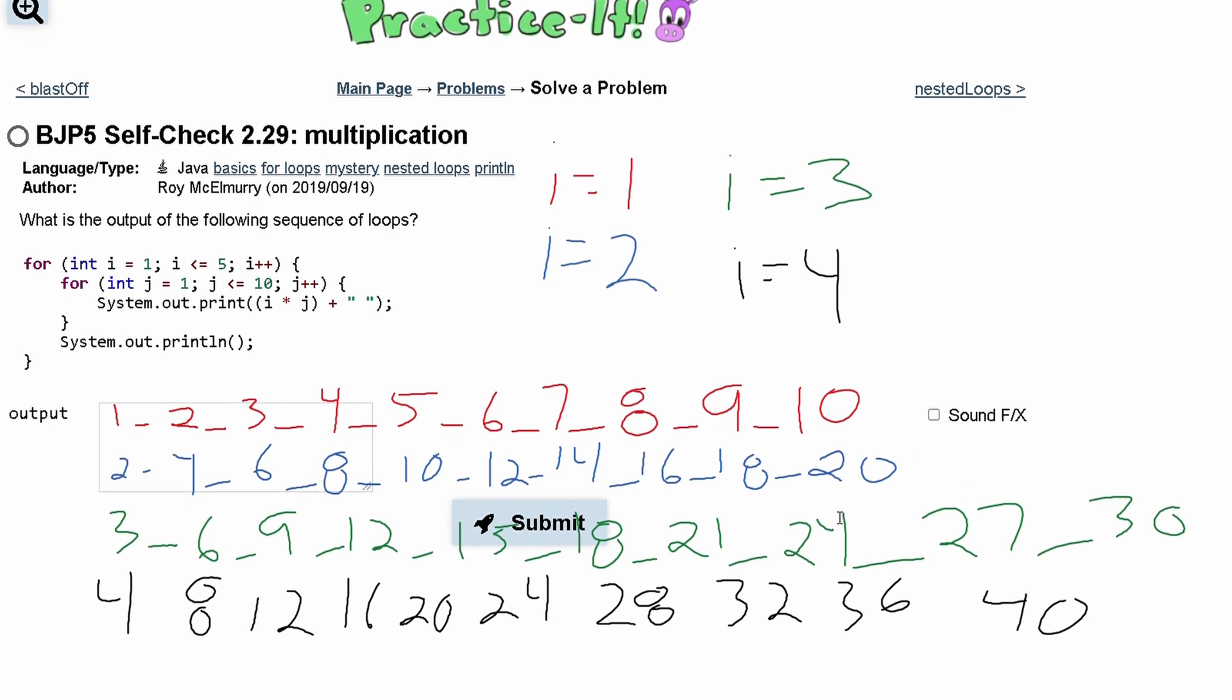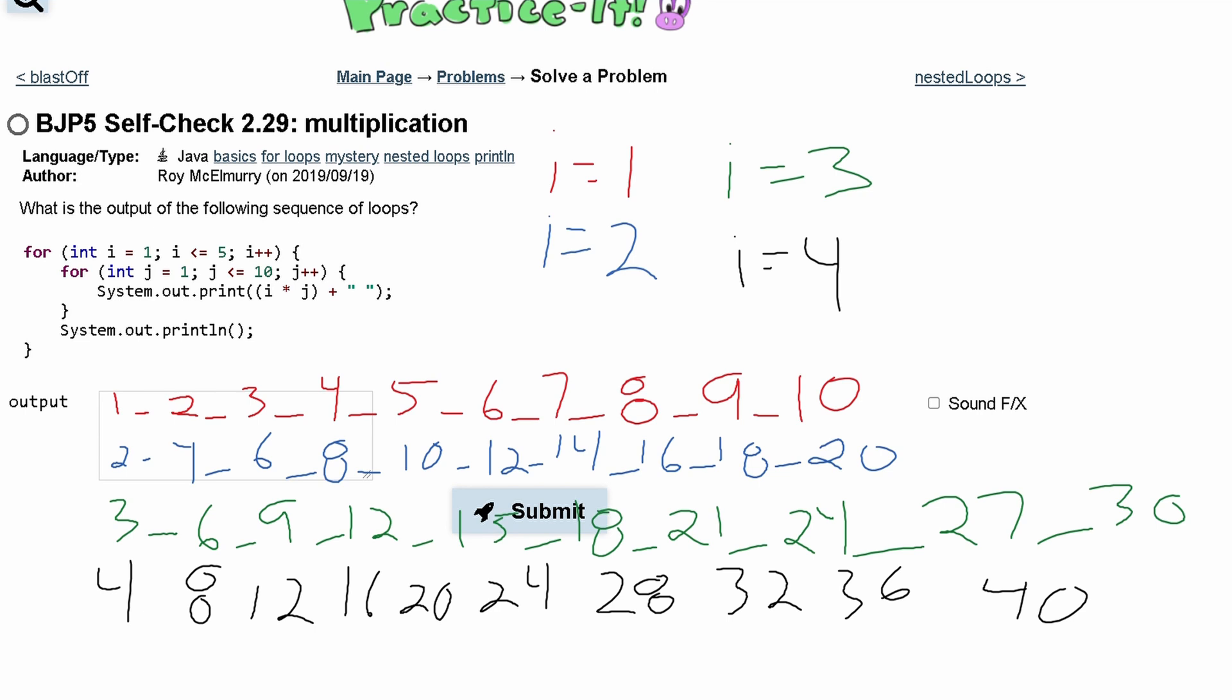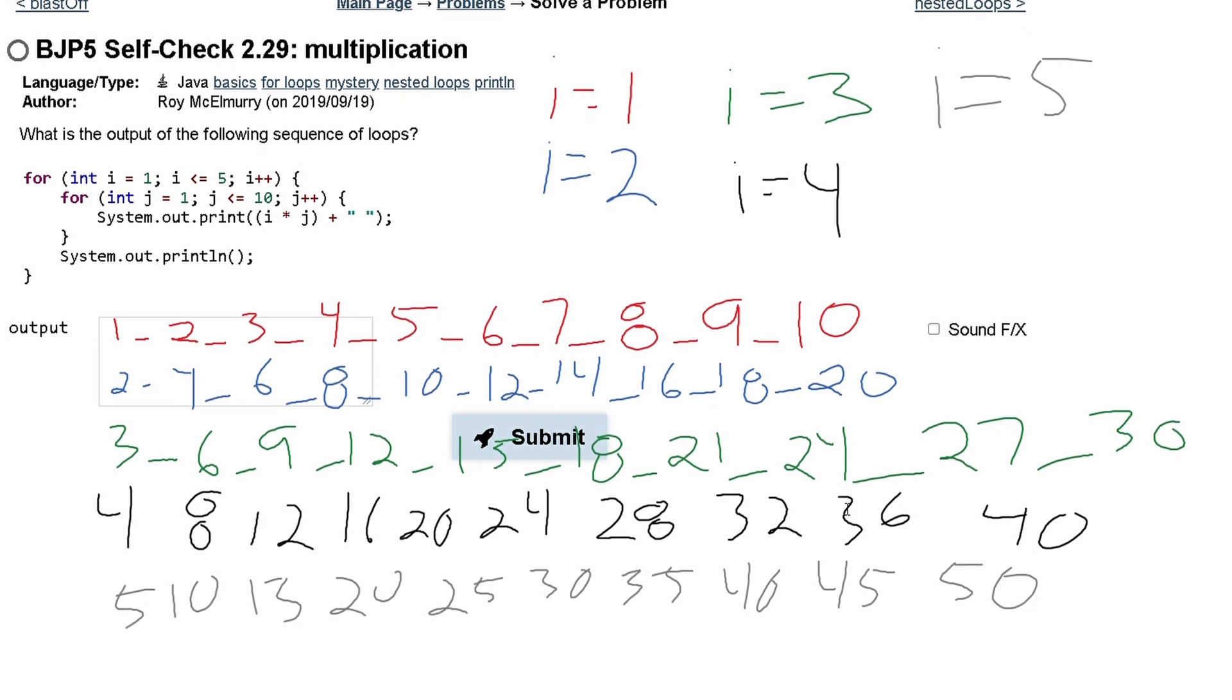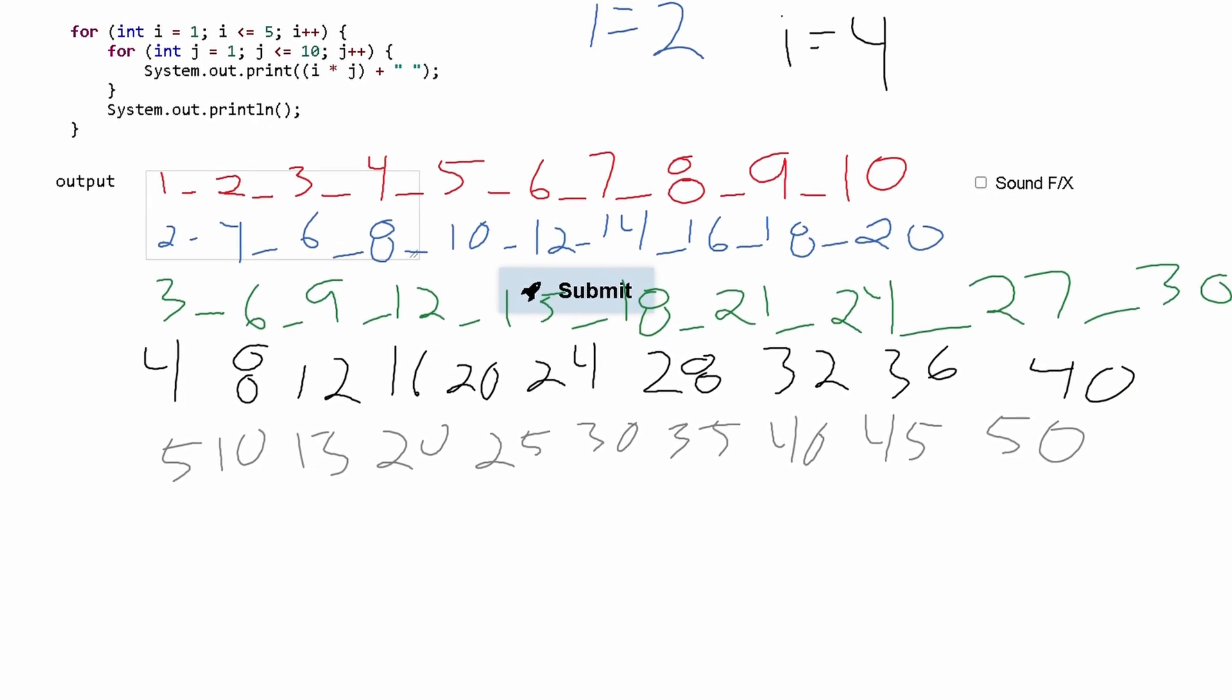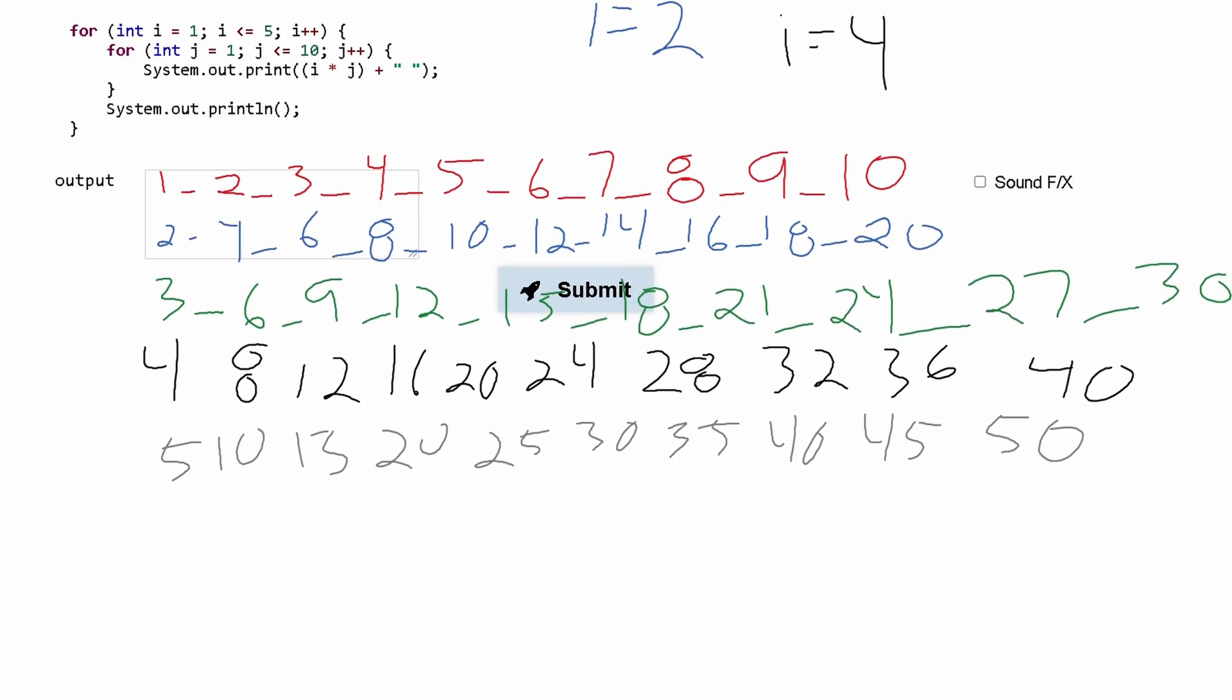After this we have one more row because i is going to keep going until it is less than or equal to 5. Now i is equal to 5. So this is the last time our outer for loop is going to run. We are going to have 5, 10, 15, 20, 25, 30, 35, 40, 45, and then lastly we have 50. We break out of this loop and then we just have a line right here at the bottom.